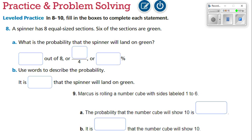A spinner has eight equal-size sections. Six of the sections are green. What is the probability that the spinner will land on green? Well, six of the sections out of eight sections are green, so this means six out of eight. If we have six over eight, we can go ahead and reduce them.